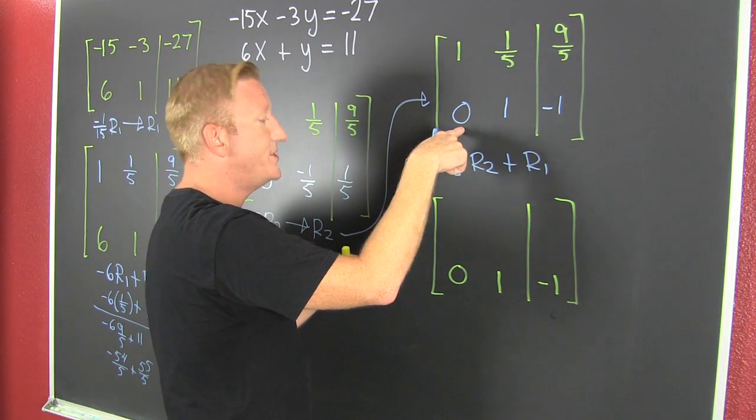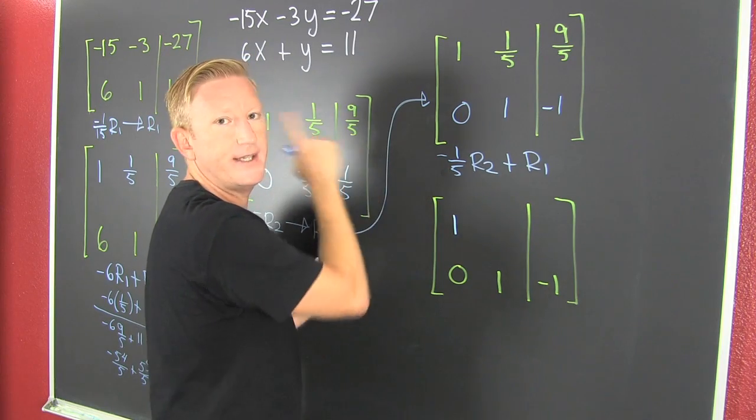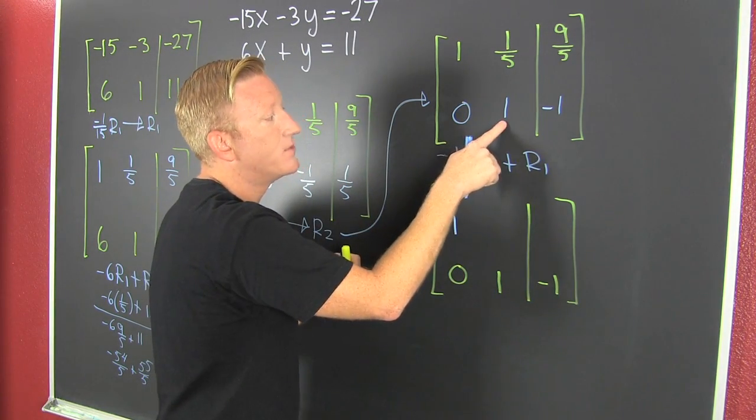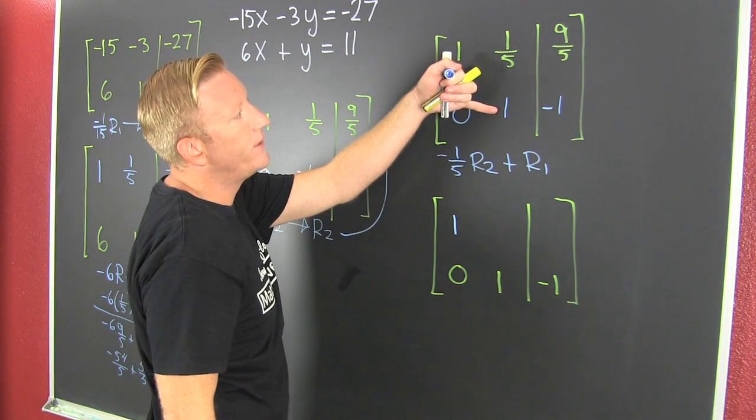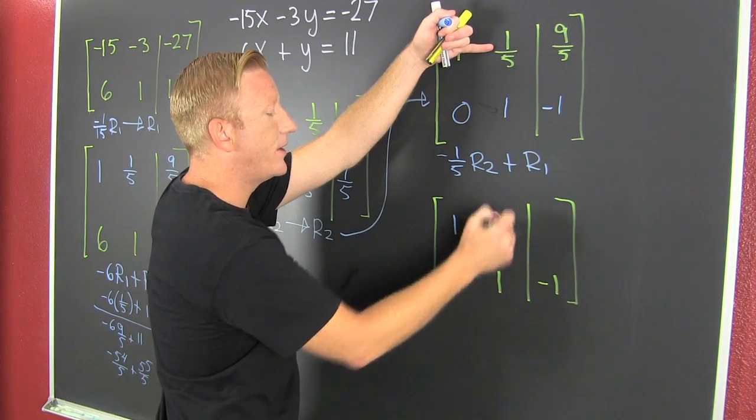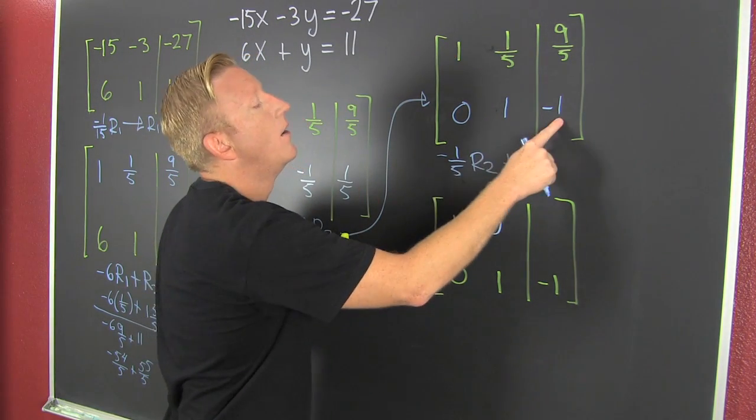Then 1/5 times 0 is 0 plus 1 is 1. That's why we do it in this order. Diagonally. Minus 1/5 times 1 is minus 1/5. Minus 1/5 plus 1/5 is 0. Very nice. Minus 1/5 times, oh boy.